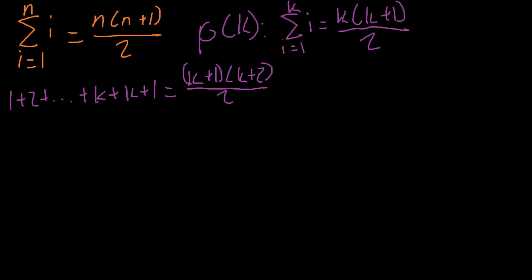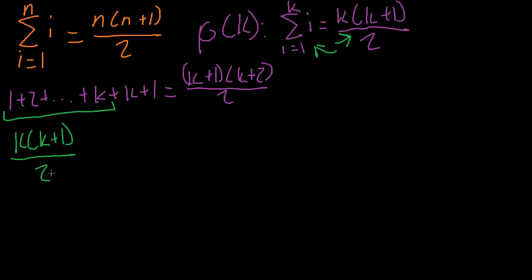To show this, we take the sum one plus two plus ... plus k and replace it using our inductive hypothesis — substituting k(k+1)/2 in place of that portion — and then continue to have plus k plus one. That gives us k(k+1)/2 plus (k+1), which is a step closer to proving that the left side equals the right side. Now I need to find a common denominator to combine these fractions.